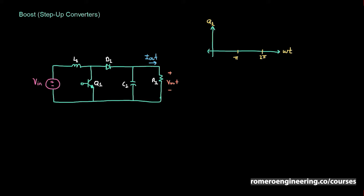I've gone ahead and drawn the circuit for a boost converter here on the left. As you can see, just like in the buck converter, we have one inductor, one capacitor, the output load, and then one diode and one transistor. Similar to the buck converter analysis, we're going to switch transistor Q1 on from zero to pi and switch it off from pi to 2pi.